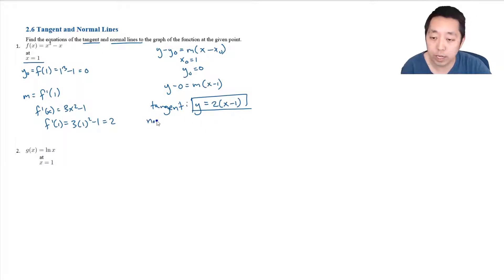Now the normal line is a little bit trickier. We have to do one extra step. If we know the tangent line has slope 2, the normal line, which is at 90 degrees, has a slope of negative one half. It's the negative reciprocal. So for the normal line I would do y equals negative one half times (x minus 1), and that's it.